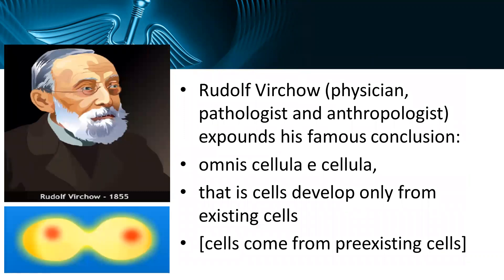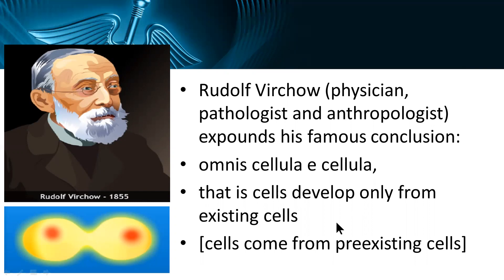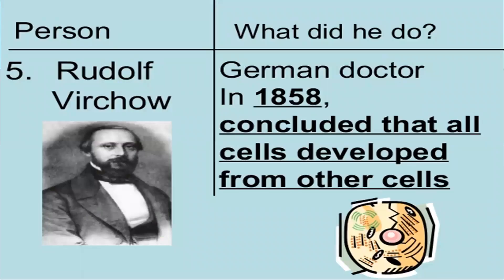After that, Rudolf Virchow — a physician, pathologist, and anthropologist — expounded his famous conclusion in 1855: omnis cellula e cellula, meaning that cells develop only from existing cells. So we can say that cells come from pre-existing cells. It was Virchow who concluded that cells developed from other cells.